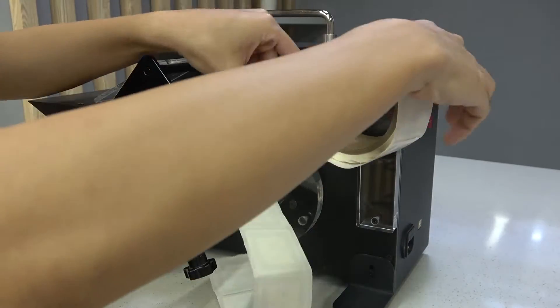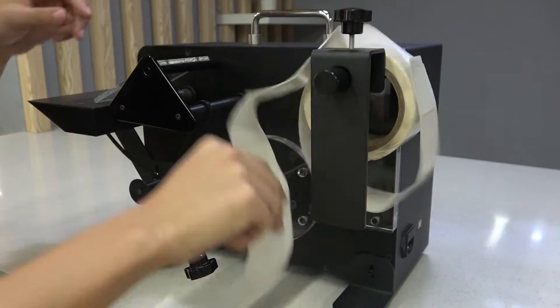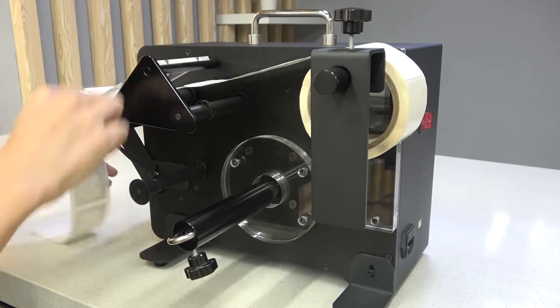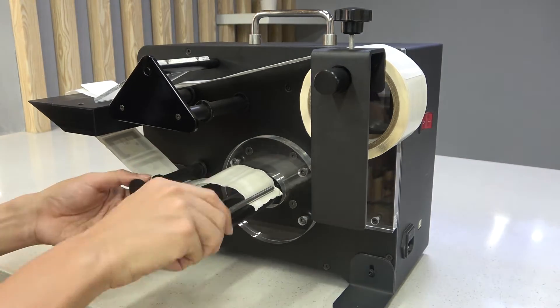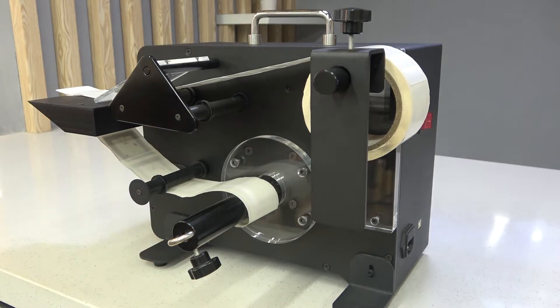The equipment needs to be installed with roll tag stickers before use. The installation steps are simple and easy. The product is suitable for roll paper tags with size within 19 cm.